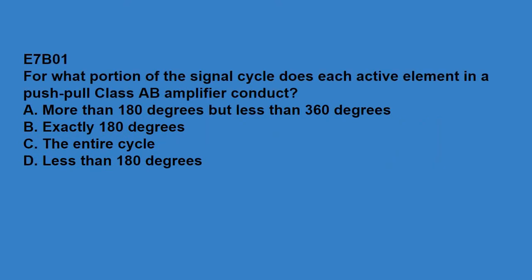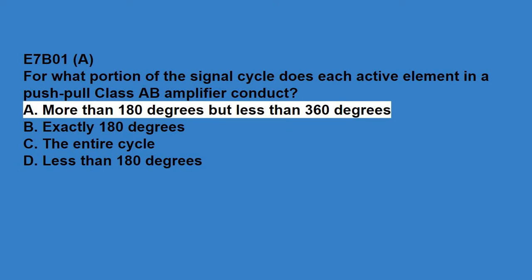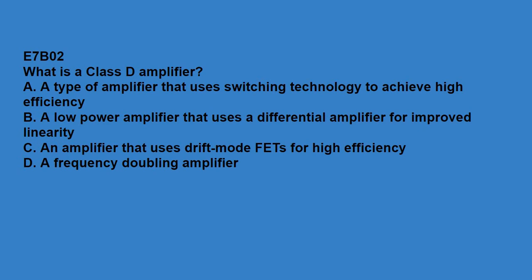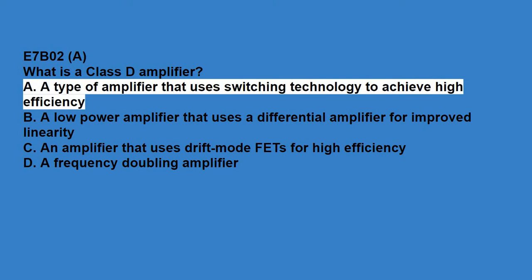E7B01, for what portion of the signal cycle does each active element in a push-pull class AB amplifier conduct? More than 180 degrees but less than 360 degrees. E7B02, what is a class D amplifier? A type of amplifier that uses switching technology to achieve high efficiency.